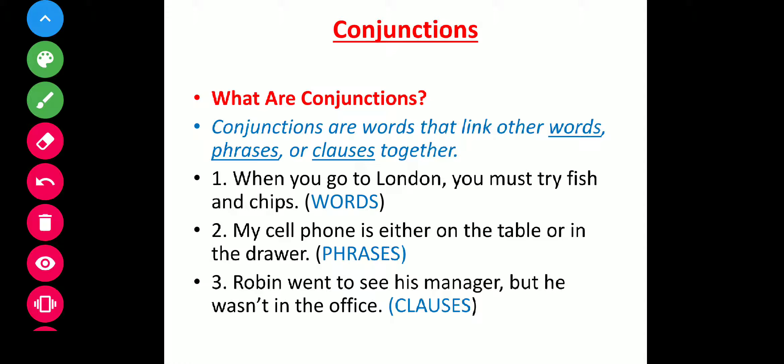What are conjunctions? Conjunctions are words that link other words, phrases, or clauses together. Conjunction is a word that connects one word to the other word, or another phrase to the other phrase, or another clause to the other clause in a sentence. So basically, what is conjunction? A joining word.